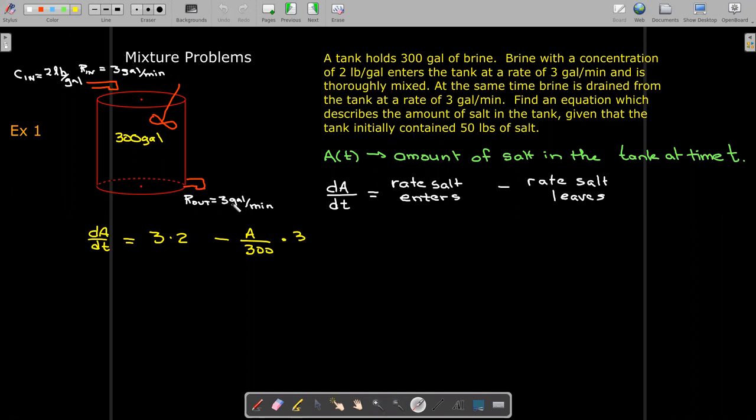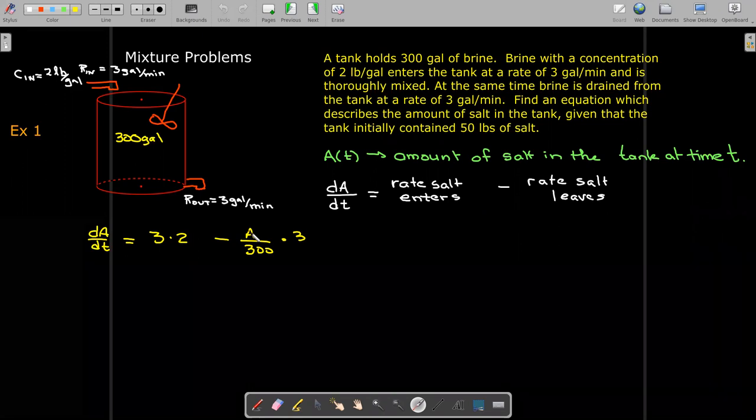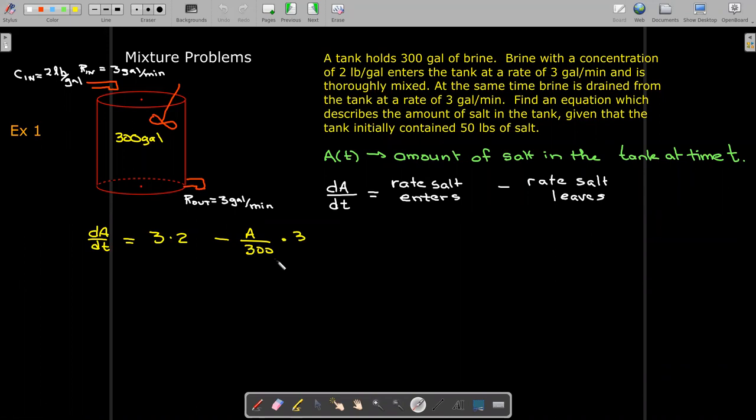Now, we have 3 gallons per minute of the completely mixed brine leaving. But what's the concentration of the brine? Well, it depends on the amount of salt and that amount of salt is changing. So we'll take the amount of salt and divide that by the amount of brine. That gives me the concentration of the mixture that's leaving the tank. And we'll multiply that times the 3 gallons per minute.